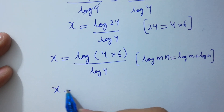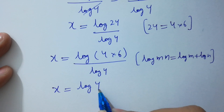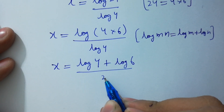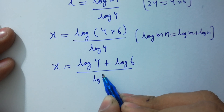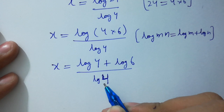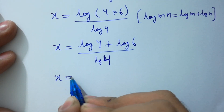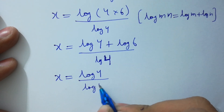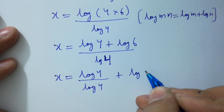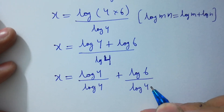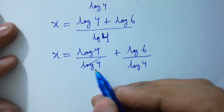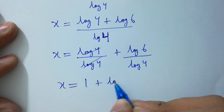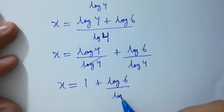x equals log 4 plus log 6 over log 4. Log 4 and log 4 will be cancelled. We have x equal to 1 plus log 6 over log 4.